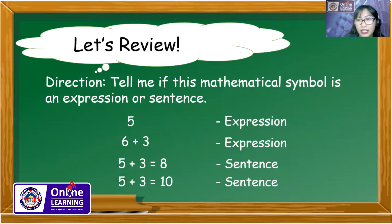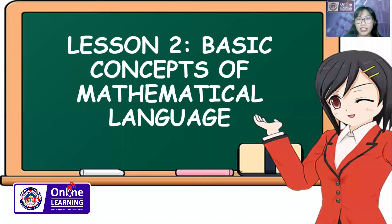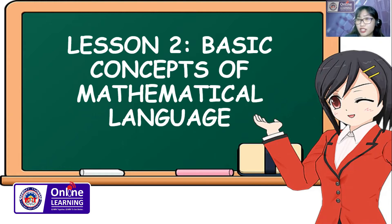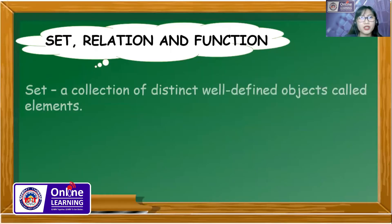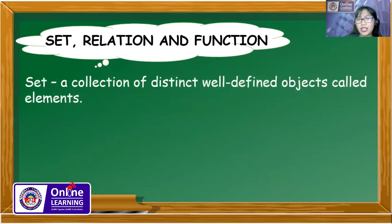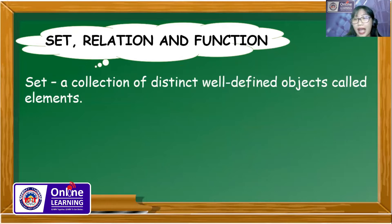That is our lesson one. In lesson number two, we cover the basic concepts of mathematical language — we define the set, the relation, and the function. A set is a collection of distinct, well-defined objects, and those objects or members in a set are called elements.